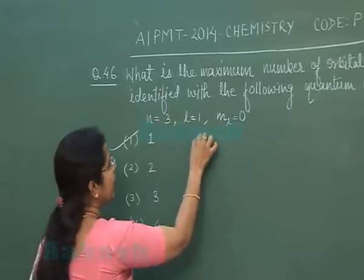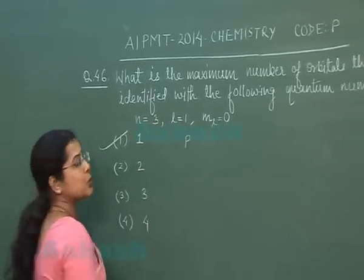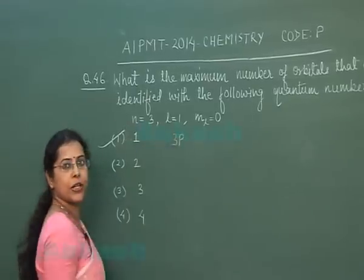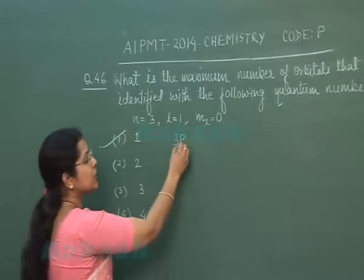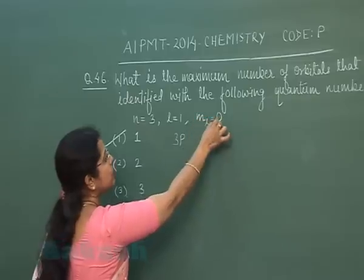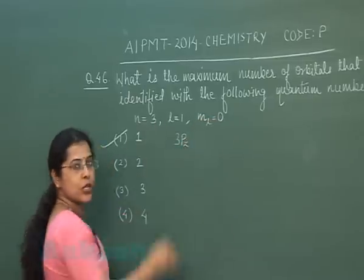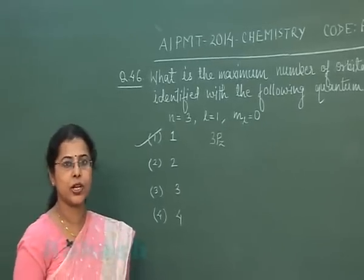We can identify that orbital as: n=3, so this is the third shell; l=1, so this is a p orbital; m=0, so this orbital is a 3pz orbital.